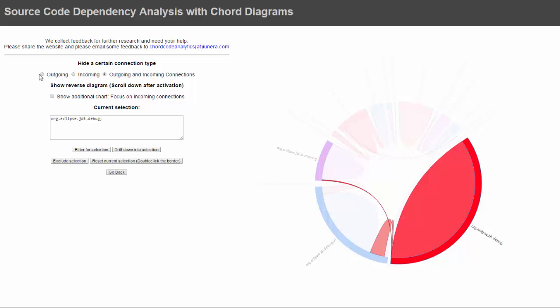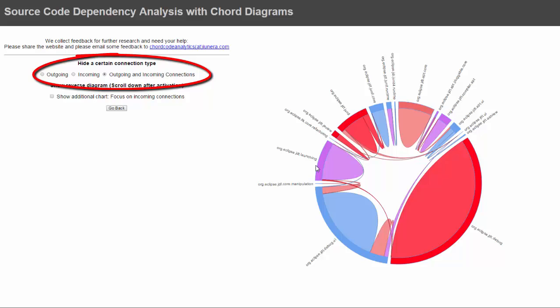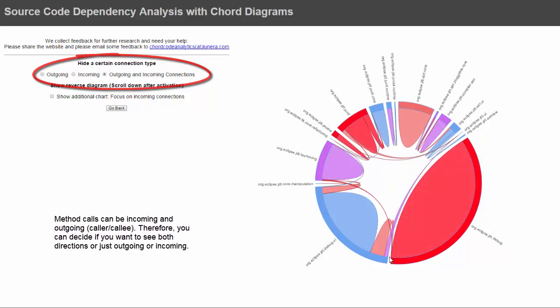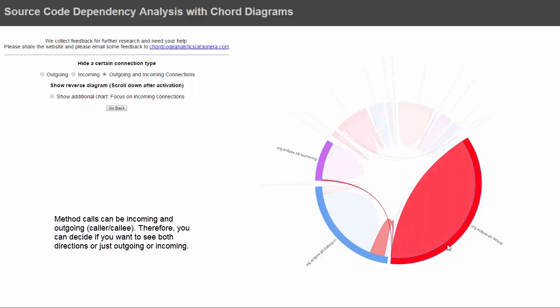Furthermore, you have some controls at the top. For instance, you can control whether you want to see only incoming or only outgoing connections from a selected and highlighted package.